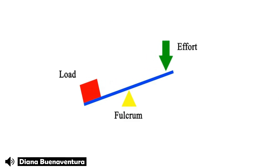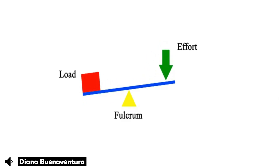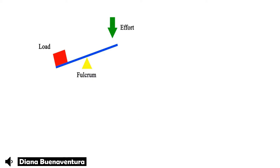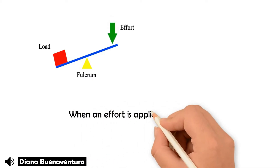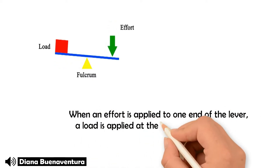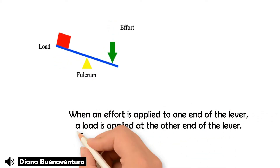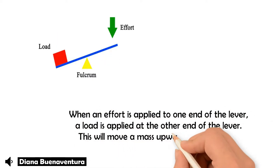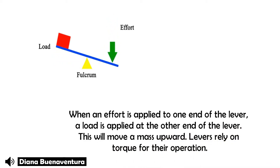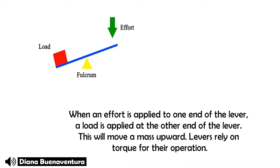Also, to identify a simple machine, they do work in one motion. When an effort is applied to one end of the lever and a load is applied at the other end, this will move a mass upward. So when you push down on one side of the beam with force, you can lift the load on the other side.